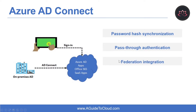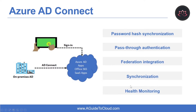The next feature is Federation Integration. Federation is an optional part of Azure AD Connect and can be used to configure a hybrid environment using an on-premises ADFS infrastructure. It also provides ADFS management capabilities such as certificate renewal and additional ADFS server deployments. The next feature is Synchronization, which is responsible for creating users, groups, and other objects, as well as making sure identity information for your on-premises users and groups matches the cloud, including password hashes. The last feature is Health Monitoring. Azure AD Connect Health can provide robust monitoring and a central location in the Azure portal to view this activity.